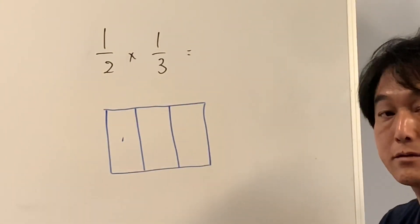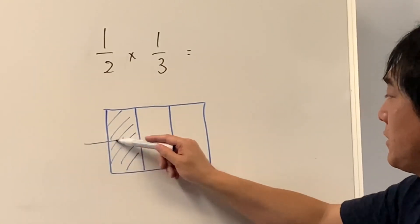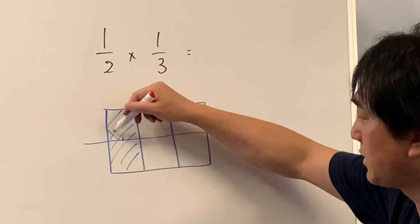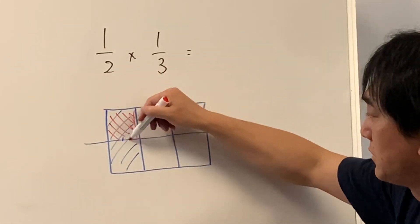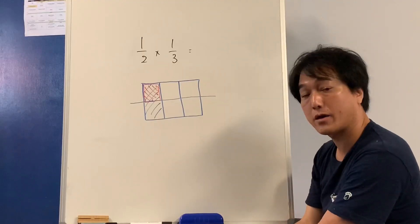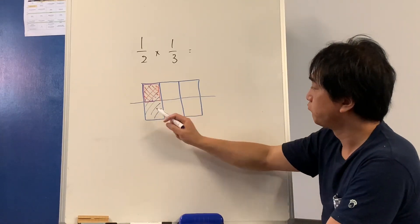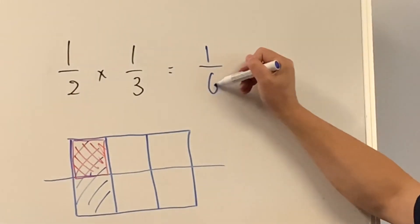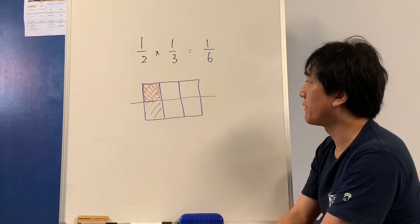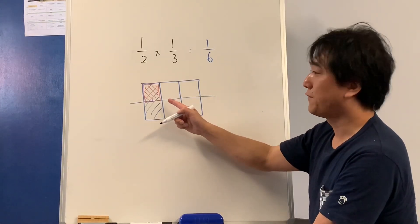That's 1 third, and I need half of it. I only need this part here. This is one-half of one-third. The answer is one-sixth. One-half times one-third is one-sixth. That makes sense if I look at a picture.